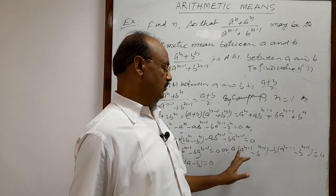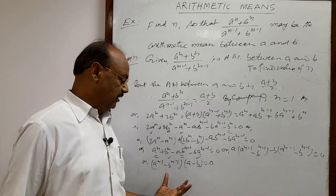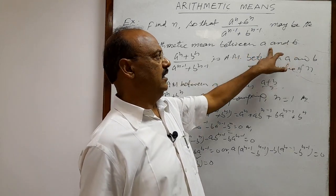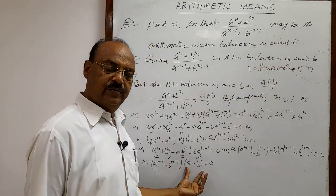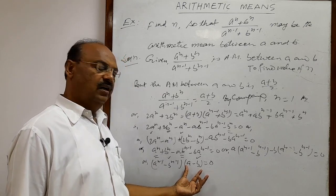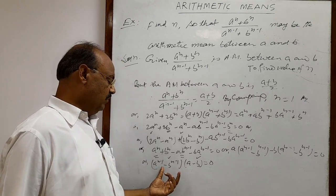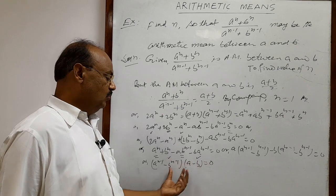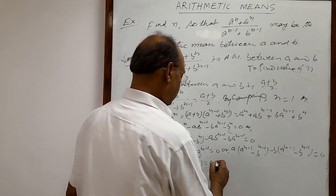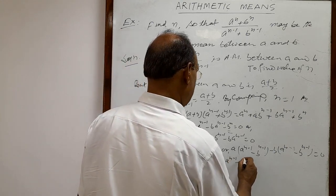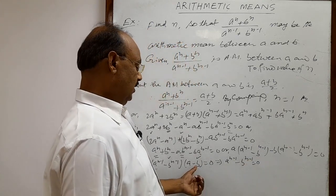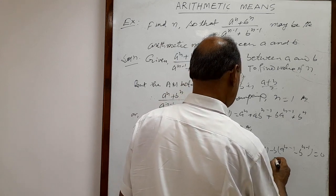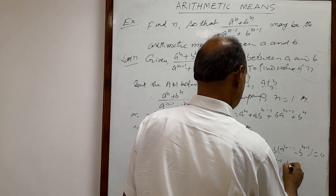We have taken this common from each of the two terms. Now, the product of these two factors is 0, but a and b are distinct numbers — that is, a and b are different numbers. So a minus b cannot be equal to 0. Therefore the only possibility is that a to the power n minus 1 minus b to the power n minus 1 equals 0, because a is not equal to b. This implies a to the power n minus 1 is equal to b to the power n minus 1.